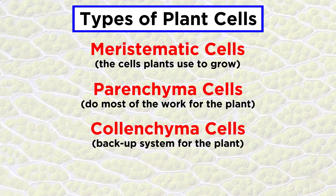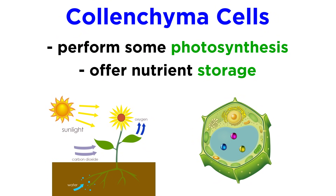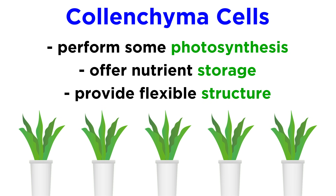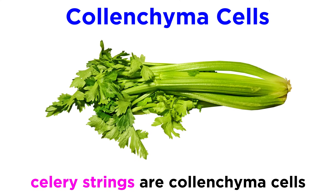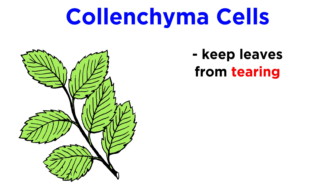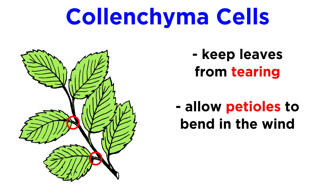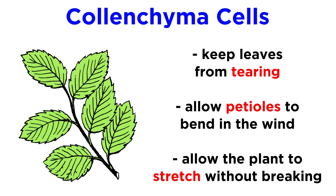The third type of plant cell is a kind of backup system for the plant. These cells can contribute to photosynthesis and nutrient storage, but the most important job for these cells is providing flexible structure to the plant. They are long cells that have thickened cell walls, meaning that when they're in a group, they act to make that part of the plant stiffer. You've probably eaten calenchyma cells before — in fact, the strings in celery are calenchyma cells. Groups of calenchyma cells can keep leaves from tearing, allow petioles, which are the little stems on the ends of leaves, to bend and flex in the breeze, and essentially give the plant some room to stretch without breaking.